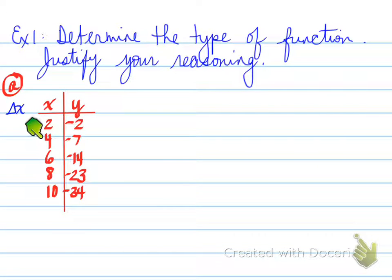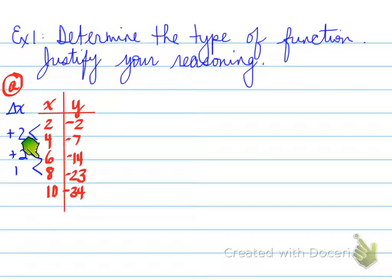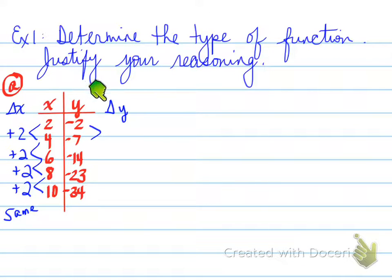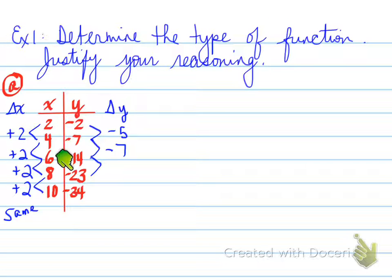Going from 2 to 4 is plus 2, from 4 to 6 is plus 2, 6 to 8 is plus 2, and 8 to 10 is plus 2. All the delta x values are the same, which gives us permission to move to the other side. Now we look at delta y — how are the y's changing? They go down 5, down 7, down 9, and down 11. These are not the same, so we have to keep going.